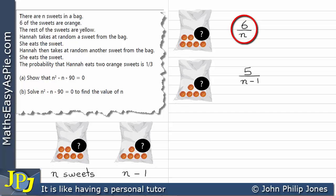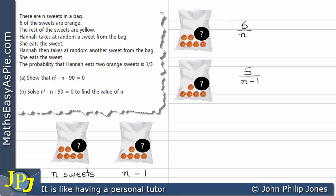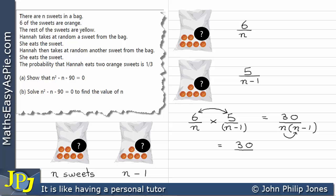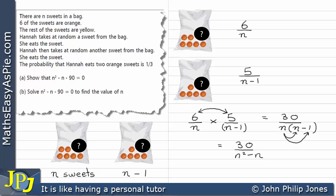The probability of Hannah taking an orange sweet from the second bag is 5 over N minus one, since there are now five orange sweets and N minus one total sweets. The probability of Hannah taking an orange sweet on her first selection followed by an orange sweet on her second selection is found by multiplying these two fractions: 6 over N multiplied by 5 over N minus one. This gives 30 over N squared minus N.